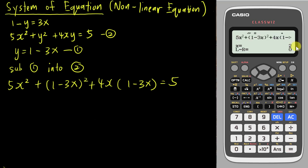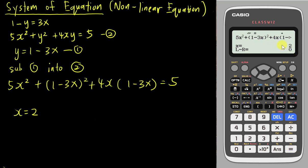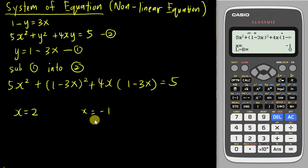Type 100 and press equal — the calculator gives the first x answer, which is 2. Write down x = 2. When you press equal again, the calculator shows x = 2, which is just your previous answer. To get the second answer, when the calculator shows the x= prompt in the black bar, enter negative 100. The calculator will then give you the second answer: x = negative 1. Note that 100 and negative 100 are just examples — you can use 1000 and negative 1000 as well.